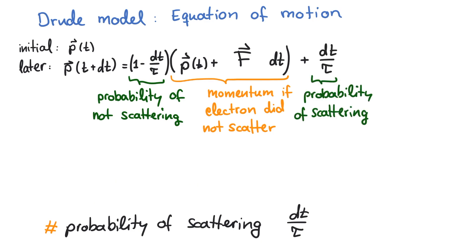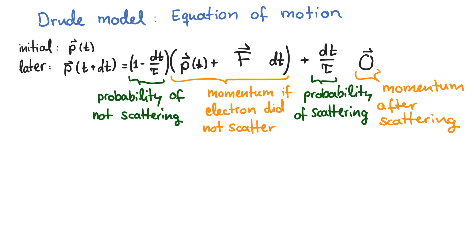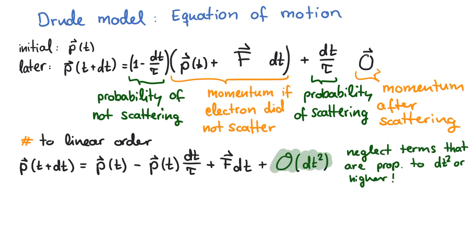Now, in the event of scattering, the momentum becomes zero. Then we multiply everything out and keep only terms of linear order in dt. Rearranging a bit yields the equation of motion for the Drude model.